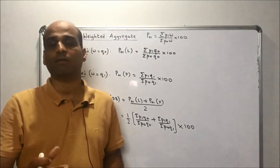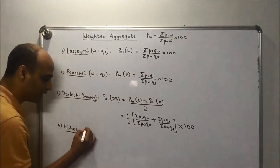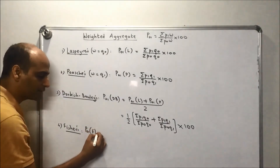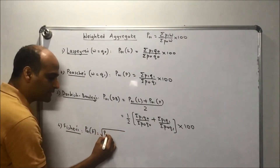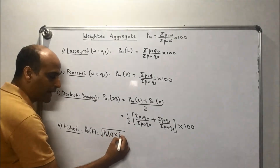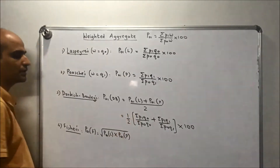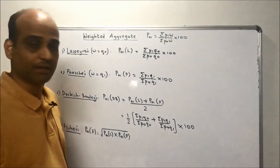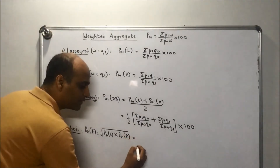Next is Fisher's index. Fisher's index is the geometric mean of the Laspeyre's and Paasche's indices. So P01(F) — F for Fisher's — is the square root of Laspeyre's index multiplied by Paasche's index.